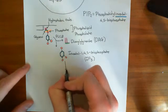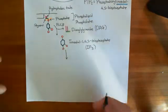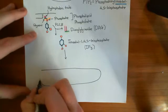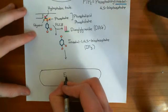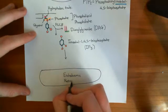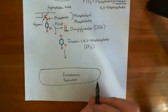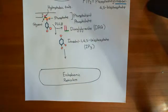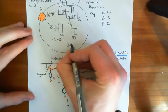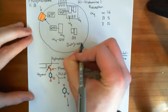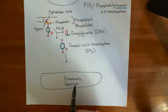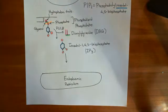IP3 goes off and binds to the IP3 receptor, which is a receptor in the membrane of the endoplasmic reticulum. The endoplasmic reticulum is an intracellular calcium store — it has high levels of calcium within its lumen. The calcium level in the cytoplasm of the cell is very low, around 100 nanomolar, but it's much higher within the endoplasmic reticular lumen. We can trigger calcium signaling by releasing calcium from the ER stores, which will then have an effect on the cell.